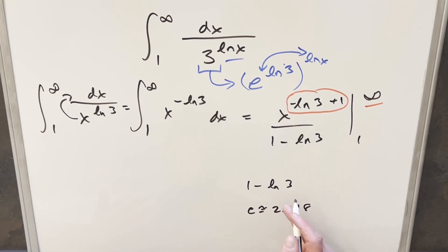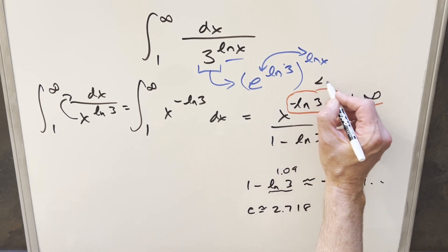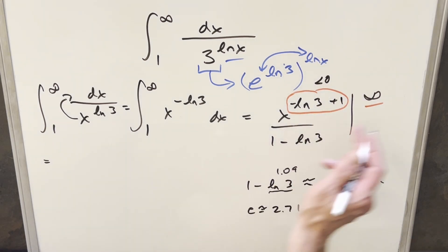And so 3 is greater than this. So this ln value is going to be greater than 1. It's actually something like 1.09. So then this value here is actually something like negative 0.09. And so since this exponent here is less than zero, when we evaluate this at infinity, the first term is just going to be zero.